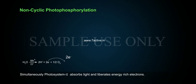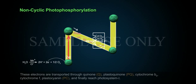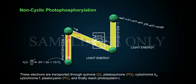Simultaneously, photosystem 2 absorbs light and liberates energy-rich electrons. These electrons are transported through quinone Q, plastoquinone PQ, cytochrome B6, cytochrome F, plastocyanin PC, and finally reach photosystem 1.